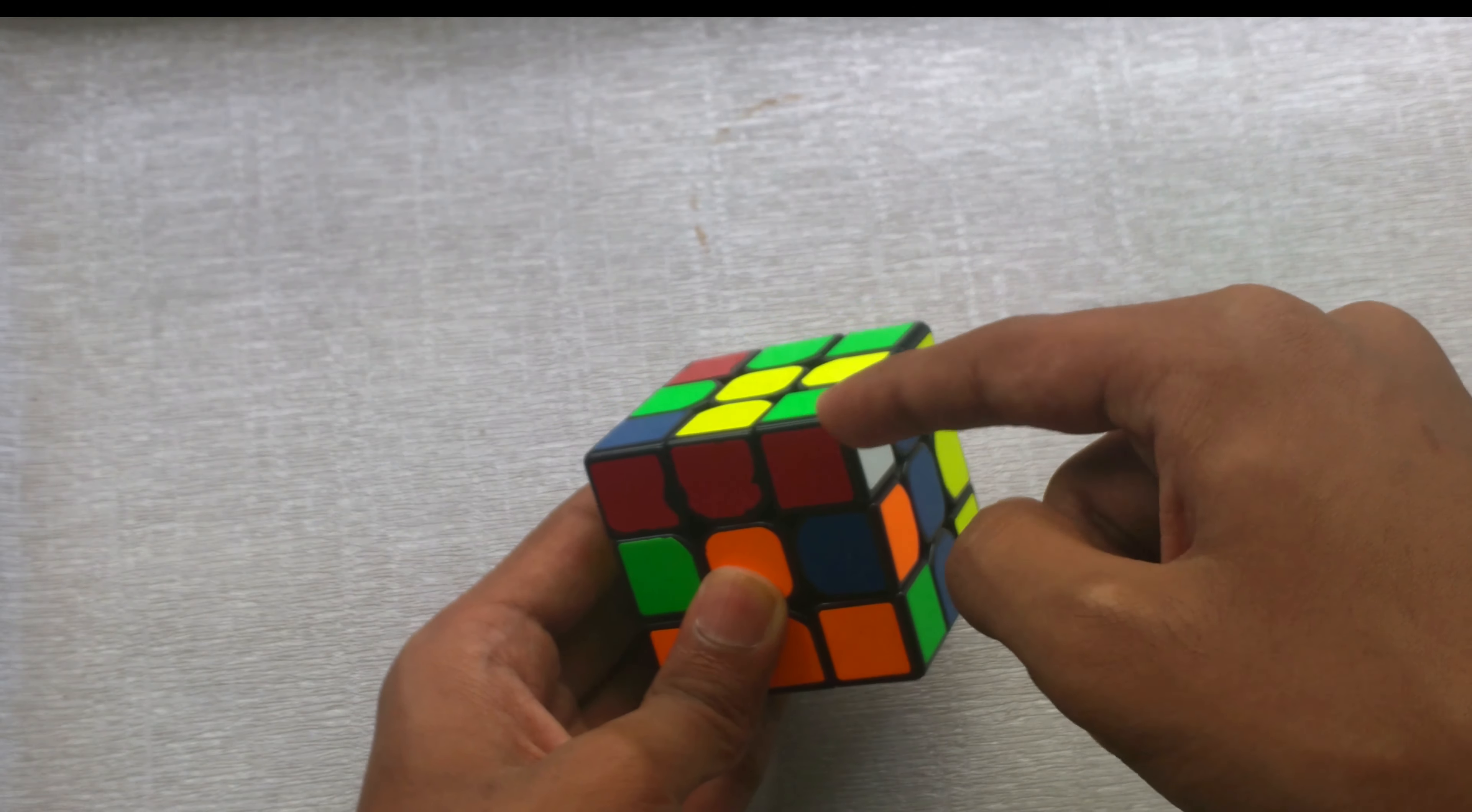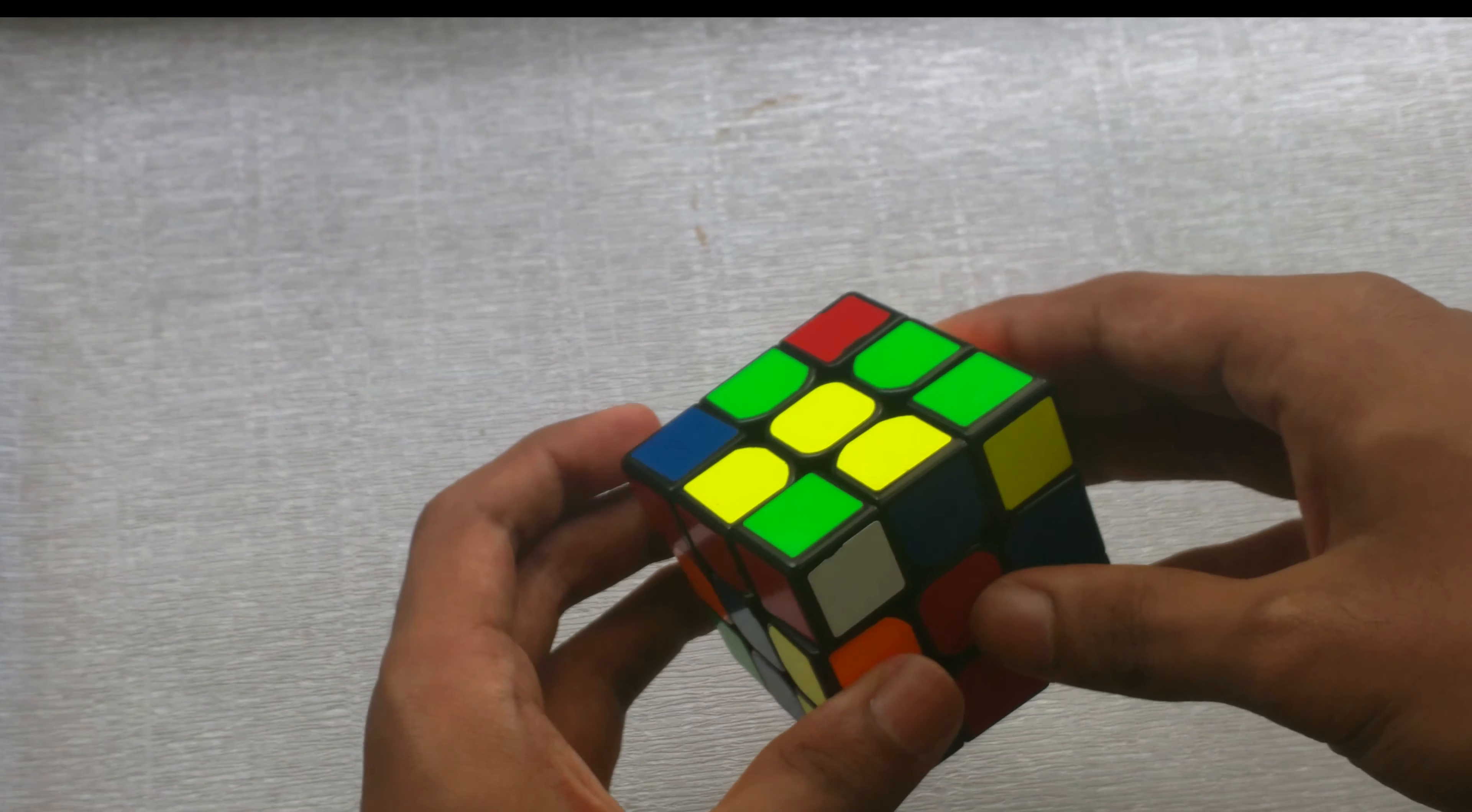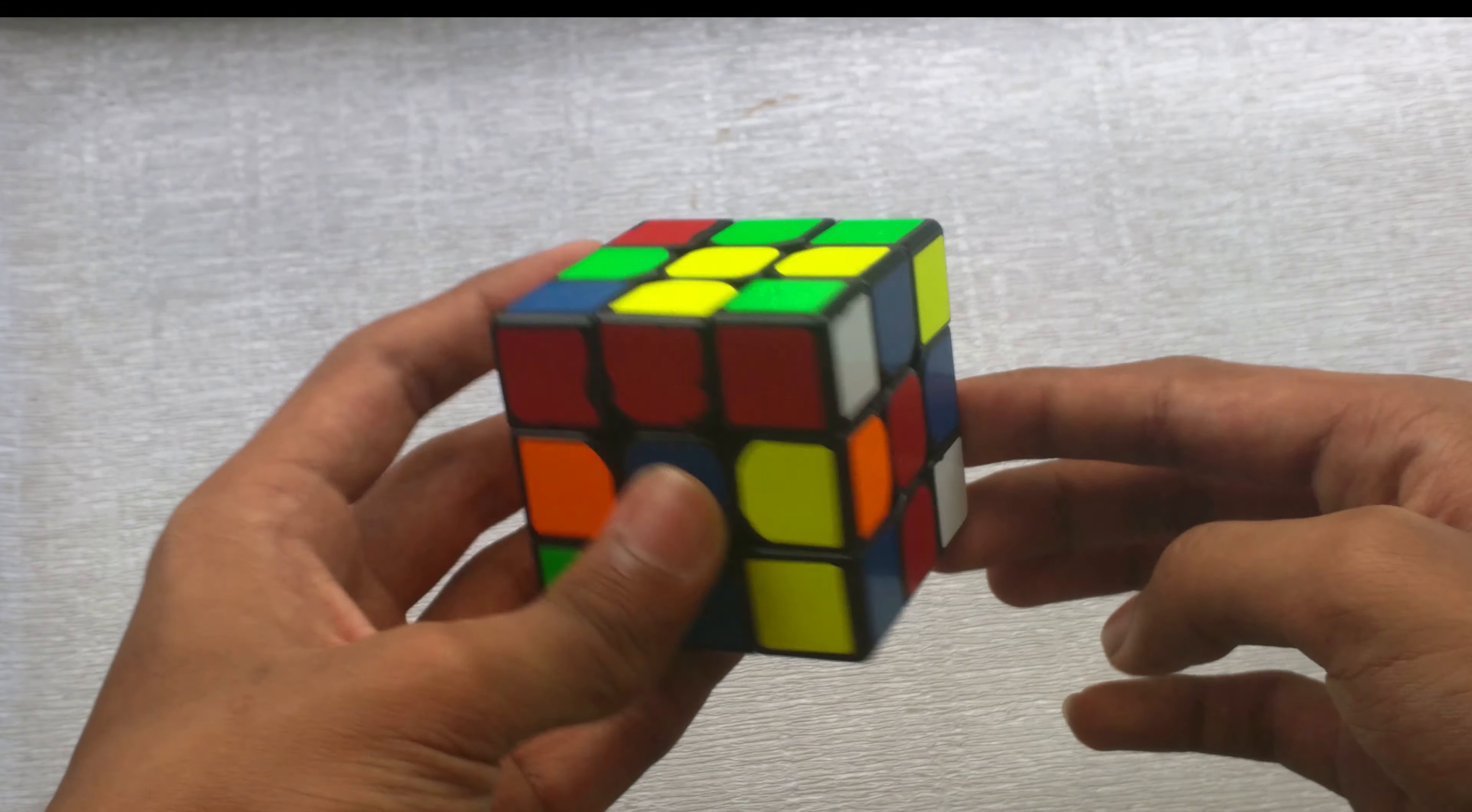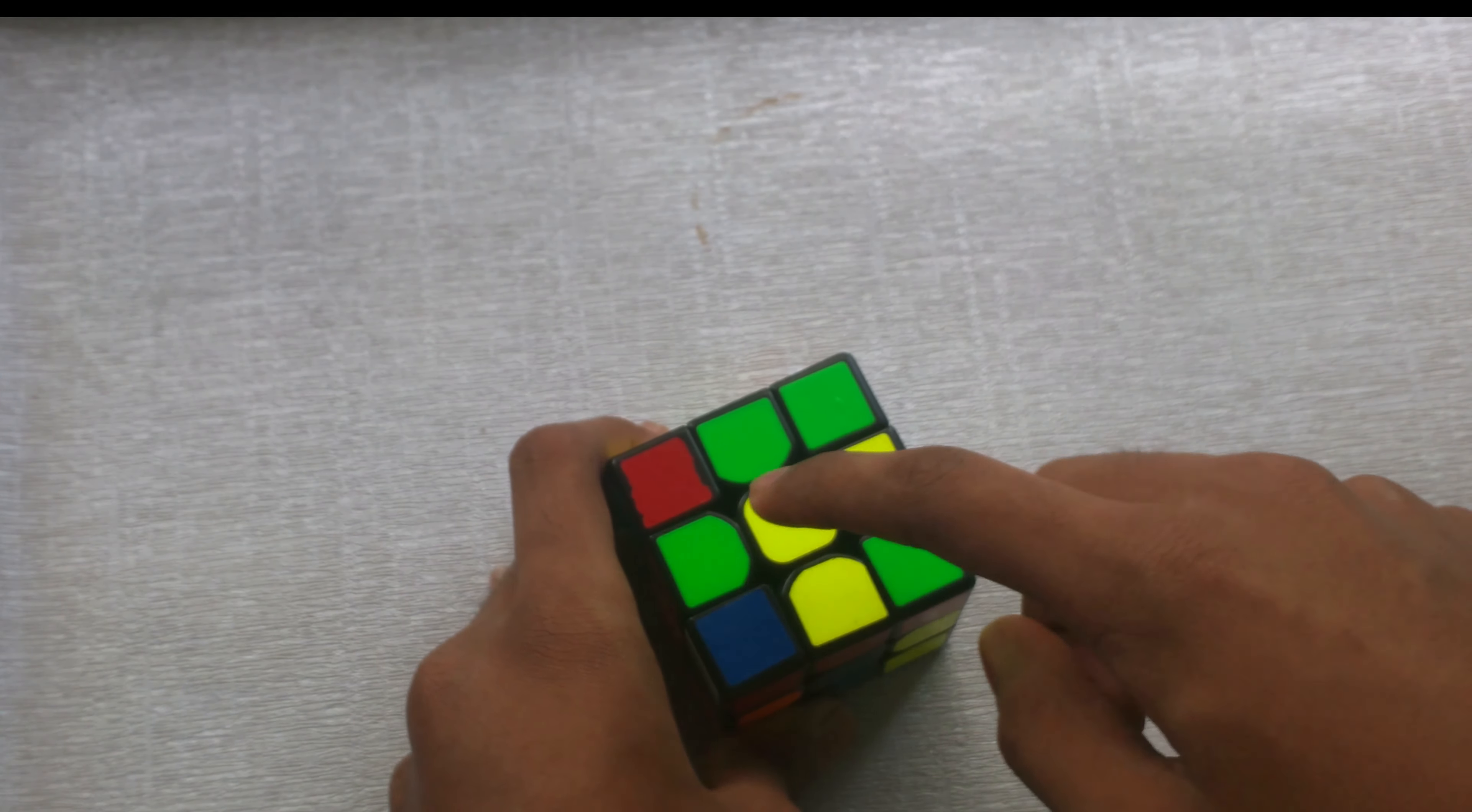In this example, I'm going to be taking the white, green, red. So then you want to find the green-red edge, which is over here. Then you want to pair them up. So in this case, you want to pair them up like this, where the color is the same on the top.